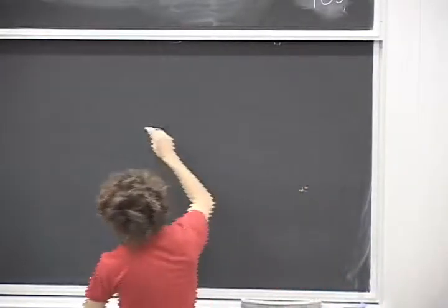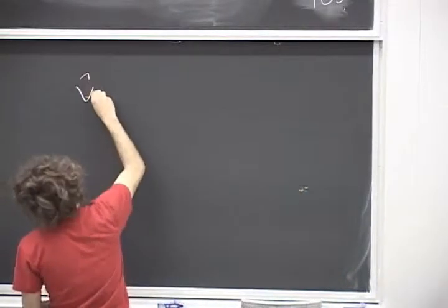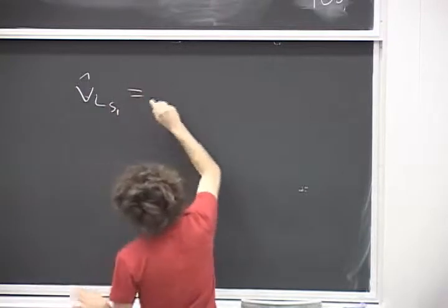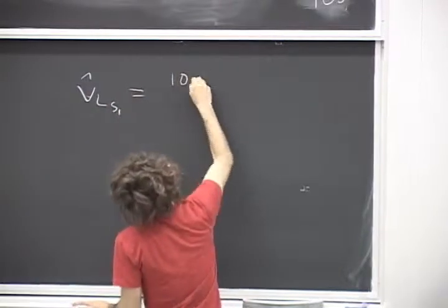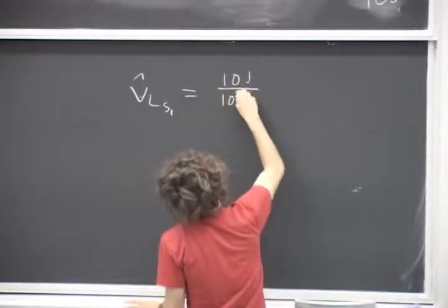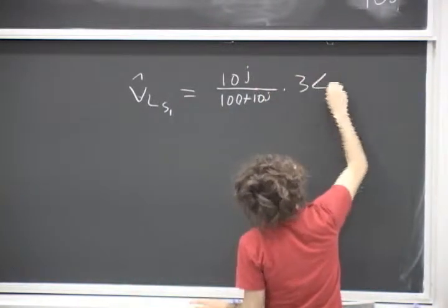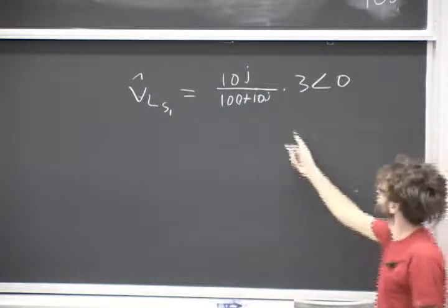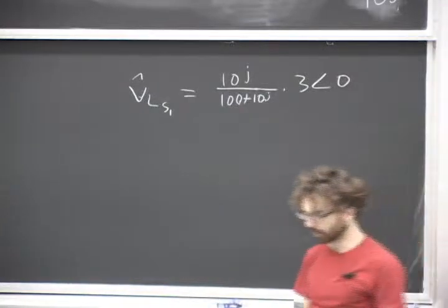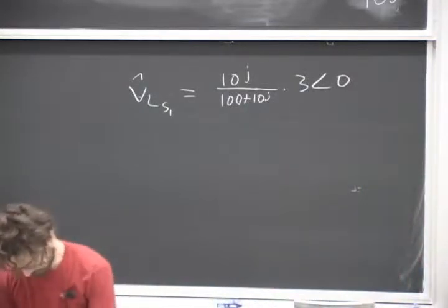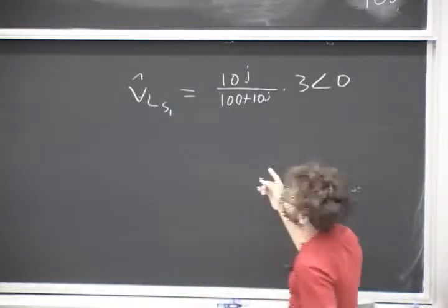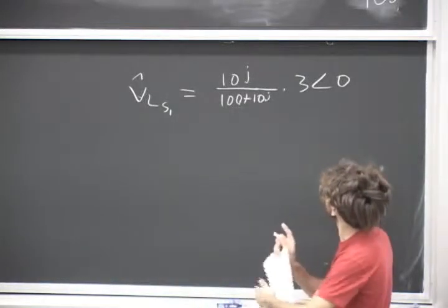So that's Z right. Okay. And so basically all that means is that V hat Ls1, for the left source, is just going to be 10j over 100 plus 10j times 3 angle 0. Okay. So what do we do with this thing? Polarize it, okay.